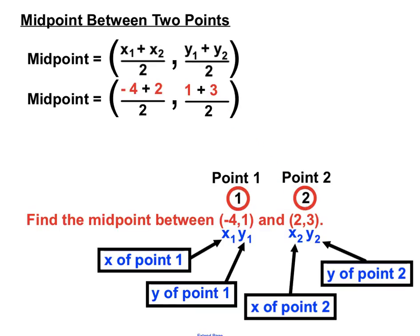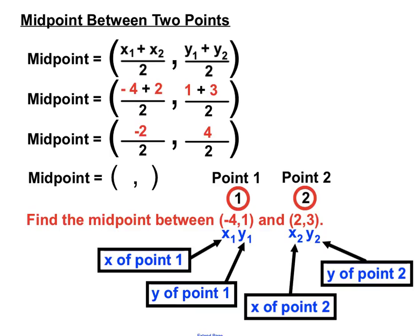Let's simplify. In our first section, -4 + 2 gives us -2, and that's over 2. In the second section, 1 + 3 is 4 over 2. We'll simplify further: -2/2 cancels down to -1, and 4/2 equals 2, so we get the midpoint of (-1, 2).